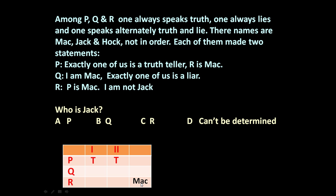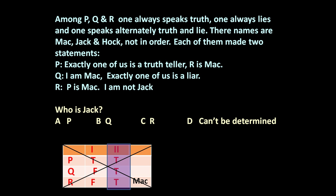If P made two true statements — exactly one of us is a truth teller, and R is Mac — let us verify this with Q. Q says: I am Mac. This is false because R is Mac. Exactly one of us is a liar — this is true. R says: P is Mac — this is false because R is Mac. I am not Zack — this is true. So P made two true statements, and Q and R each made one true statement. But at least one of the three should have made both statements false. This means our assumption is wrong — P did not make two true statements.